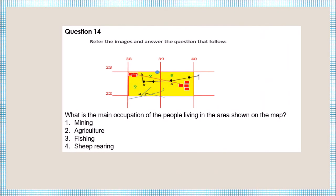Question number fourteen: what is the main occupation of the people living in the area? You can see the area is mostly covered by yellow wash or yellow color. Yellow color means the people are engaged in agriculture.